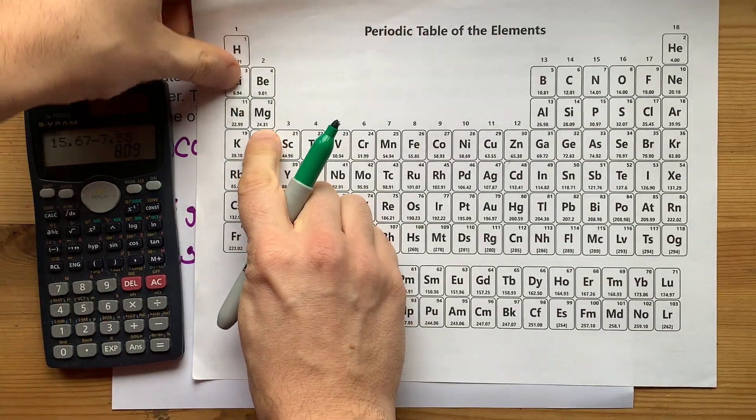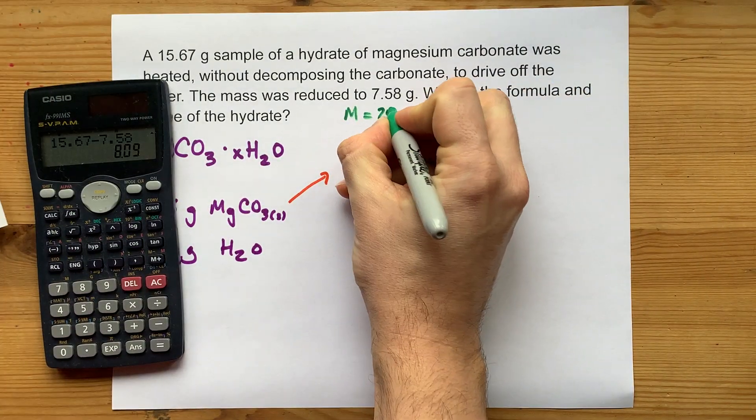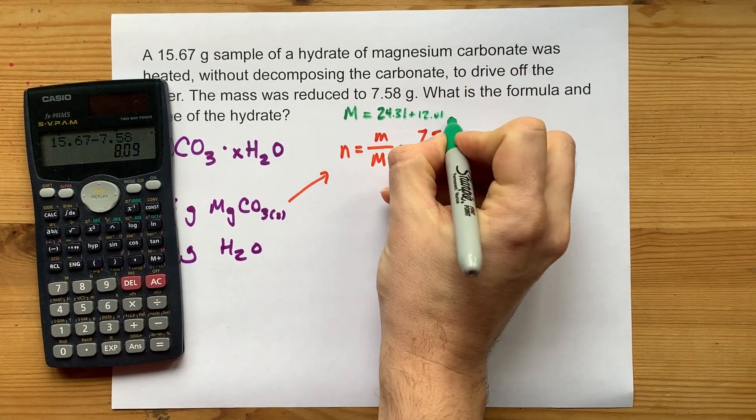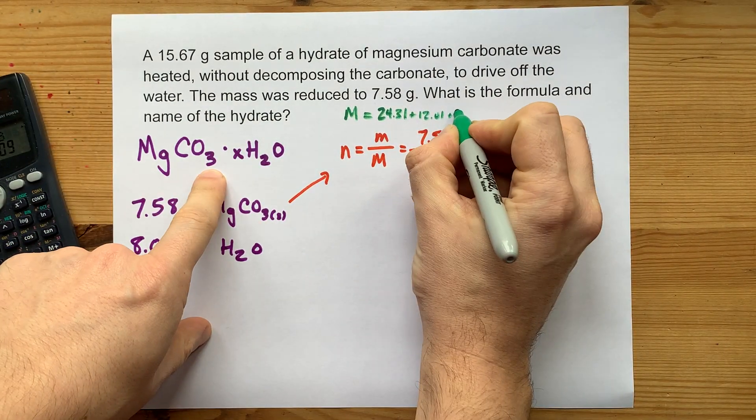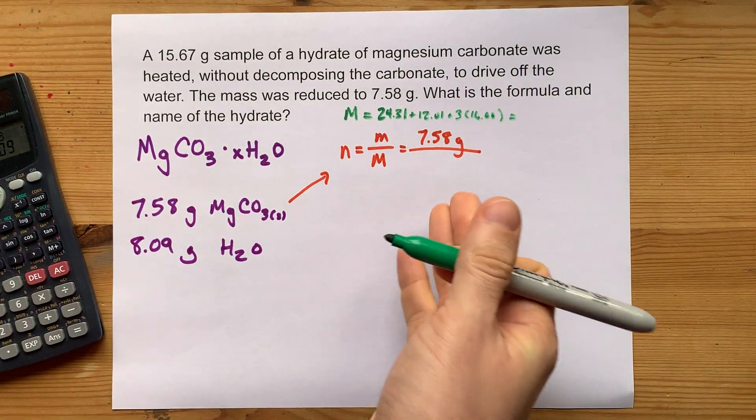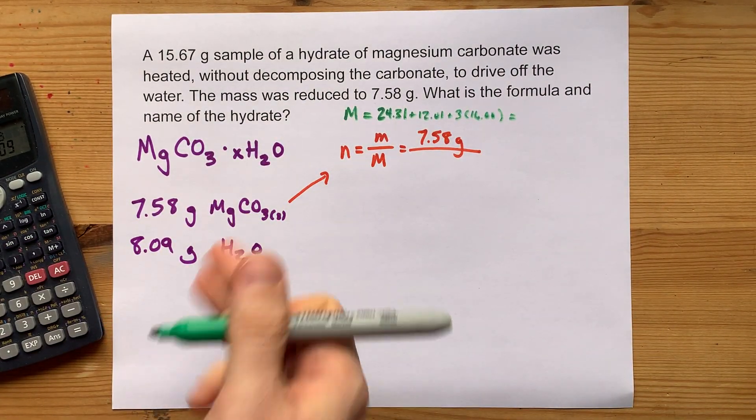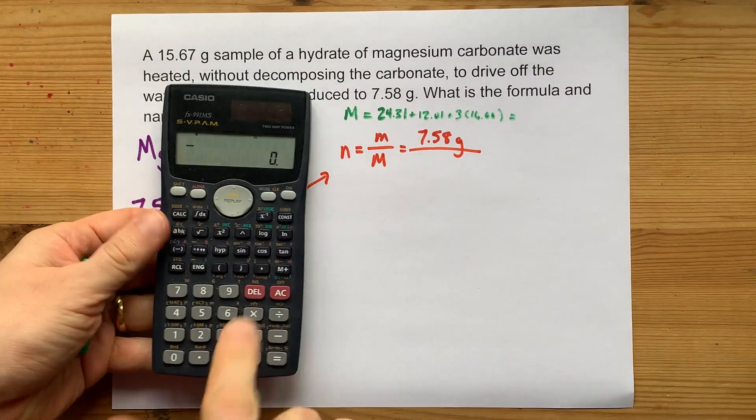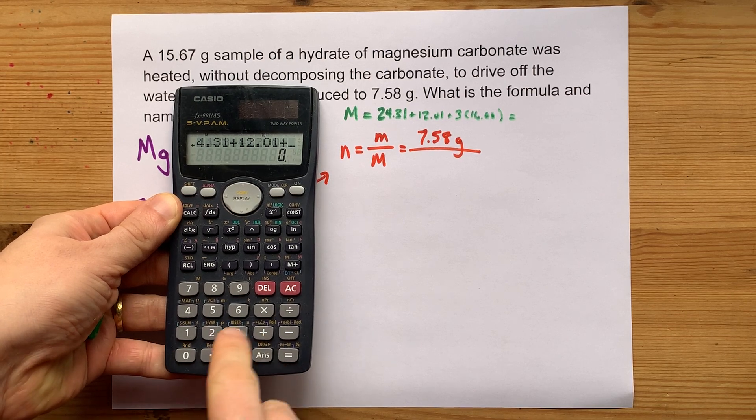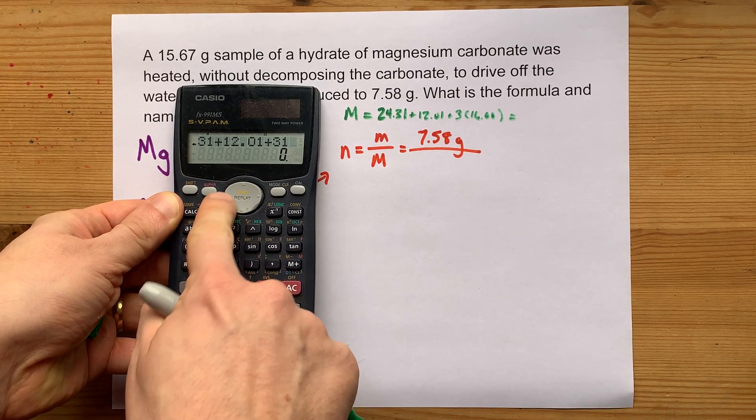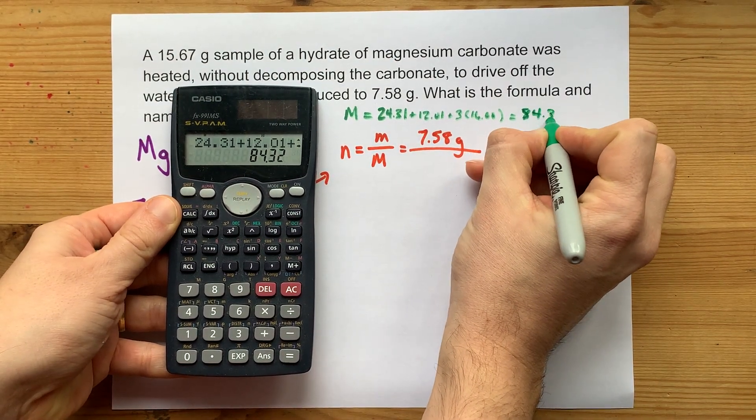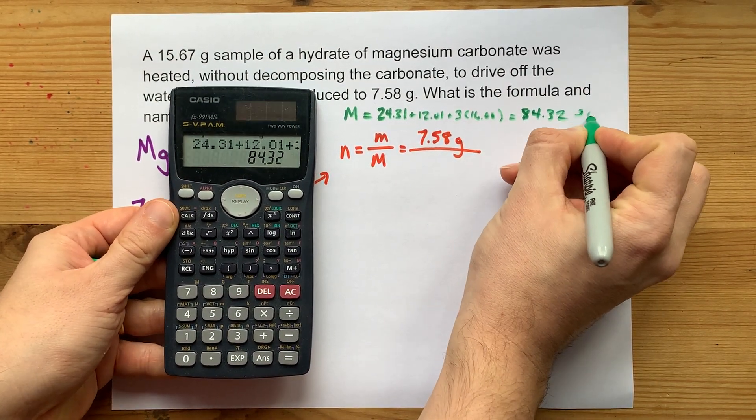Magnesium contributes 24.31. Carbon contributes 12.01. And we have three oxygens, each of which contributes 16. I'm just adding up the molar masses of the atoms that make up that compound. 24.31 plus 12.01 plus 3 times 16. That's 84.32 grams per mole.